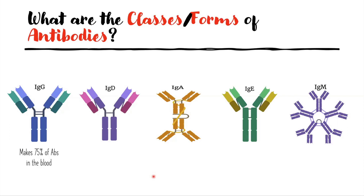As you can see, there are differences between the five classes. The bonds here differ: IgA is a dimer, IgE has three fragments, and IgM has the pentameric shape.